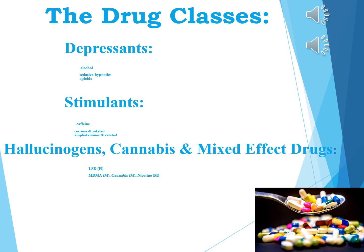The DSM-5 TR has 10 drug classes. The textbook by Comer and Comer organizes these into three groups: depressants — including alcohol, sedative/hypnotics, and opioids; stimulants — including caffeine, cocaine and related drugs, and amphetamine and related drugs; and hallucinogens, cannabis, and drugs with mixed effects — including LSD, MDMA, cannabis, and other drugs.